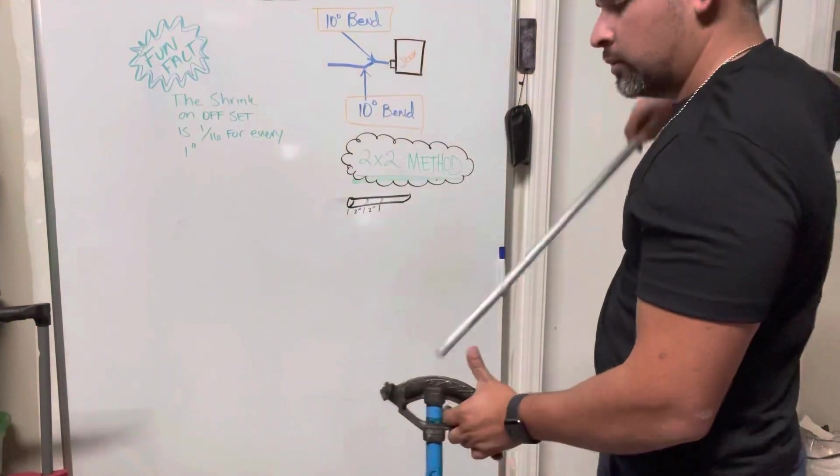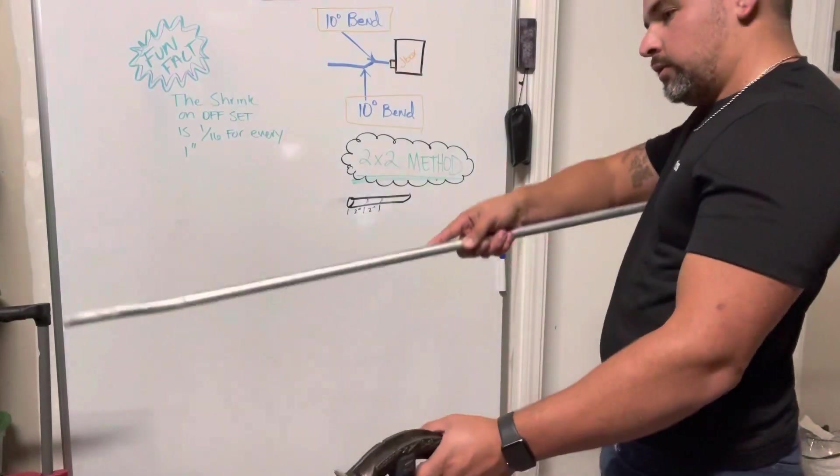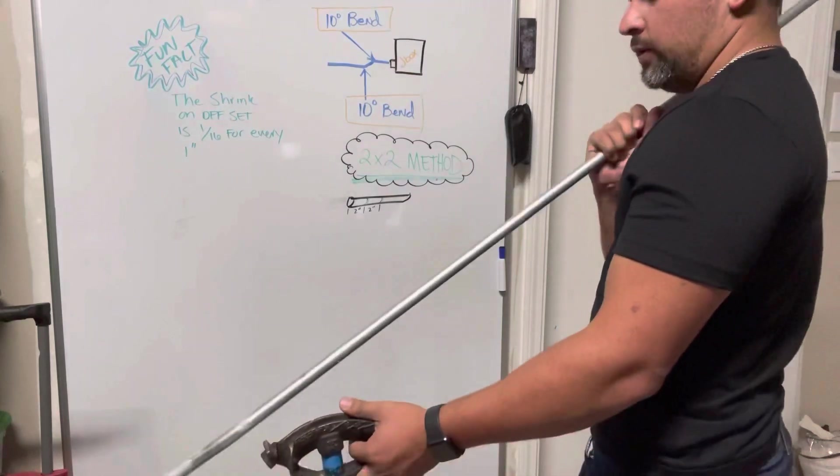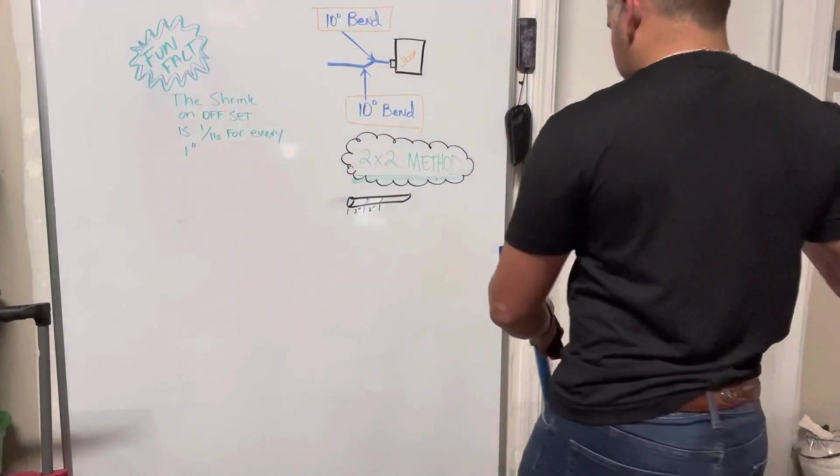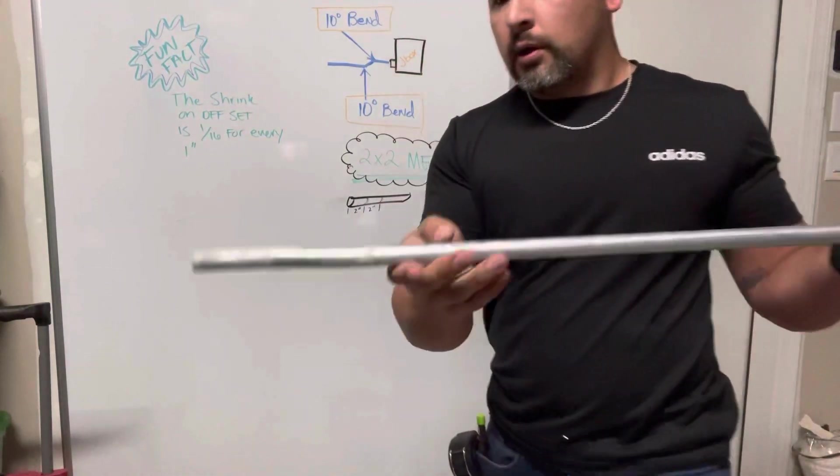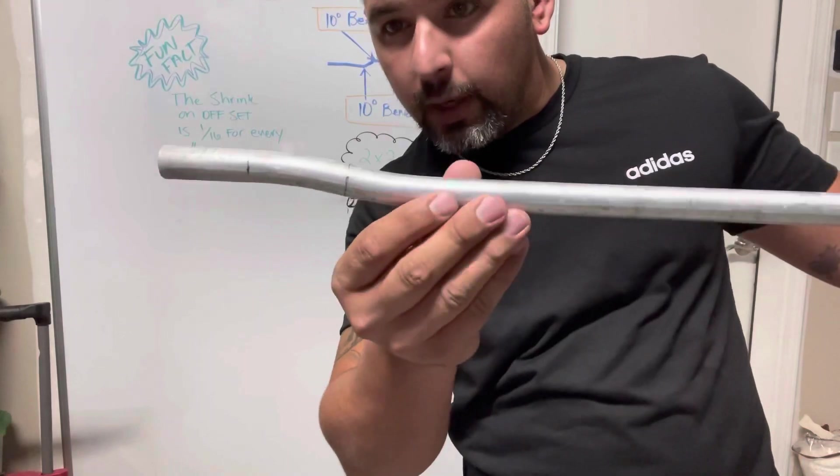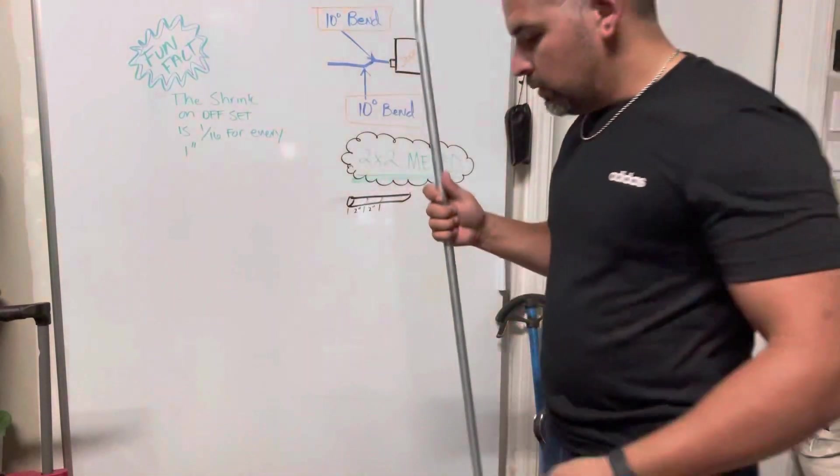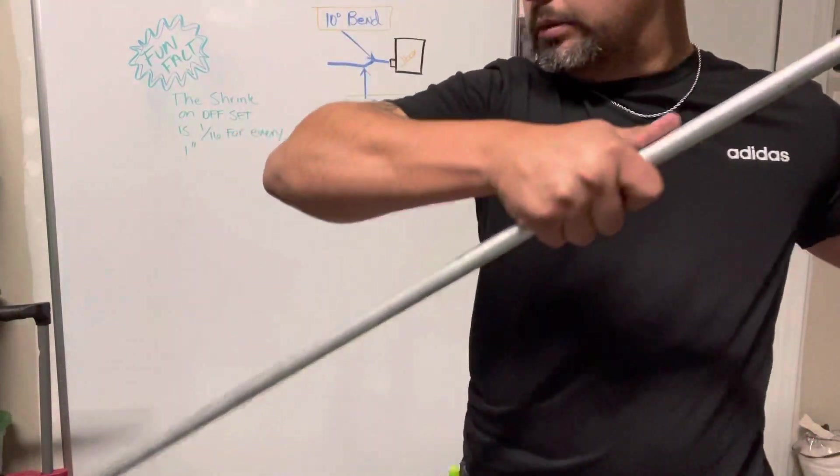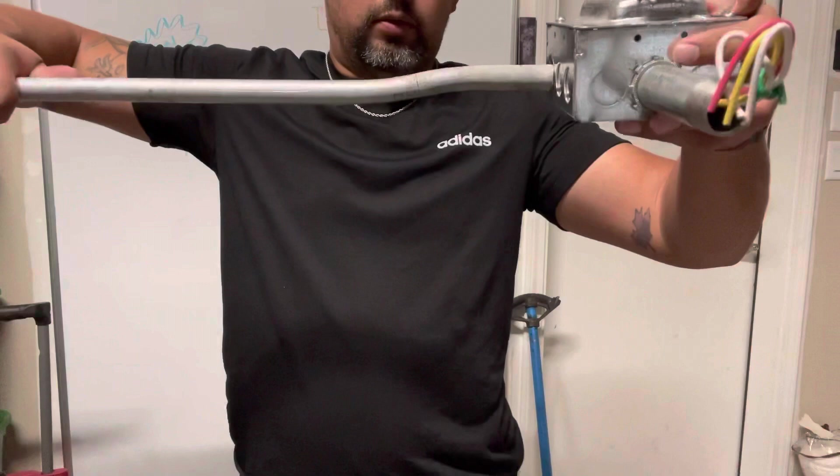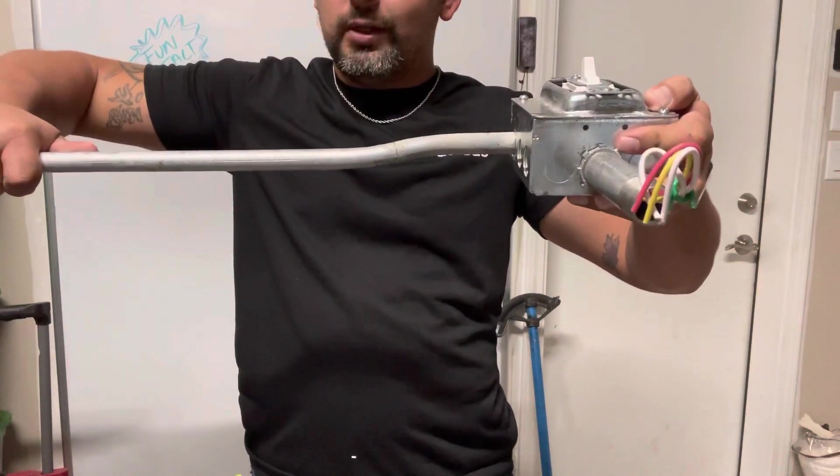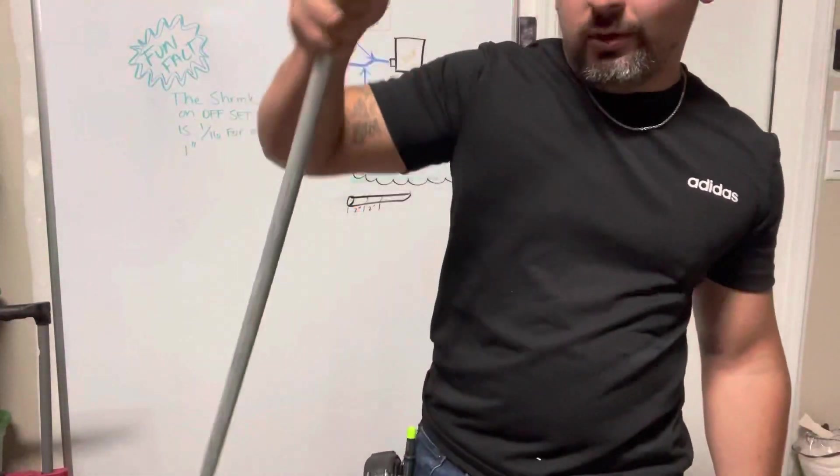Looks pretty close. This is kind of what a box offset should look like. Then do this little number. It'll go in just like that, and it's nice, smooth, clean looking. That's how the professionals do it.